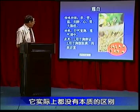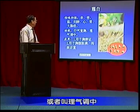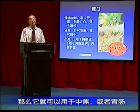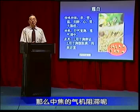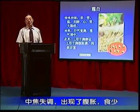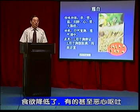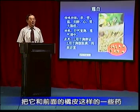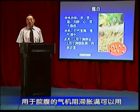第二个功效，我们把它叫做行气调中，或者叫理气调中。它可以用于脾胃、胃肠，包括大肠的气机阻滞。脾胃的气机阻滞、脾胃失调，出现了腹胀、食少、食欲降低，有的甚至恶心呕吐，薤白完全可以用。把它和前面的橘皮这样的一些药同样使用，甚至单用，用于脾胃的气机阻滞、胀满可以用。